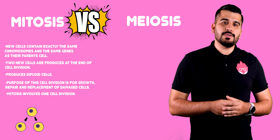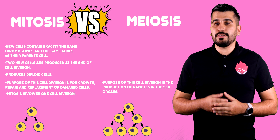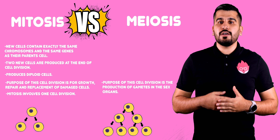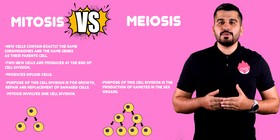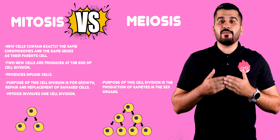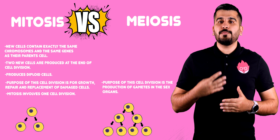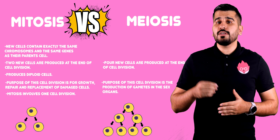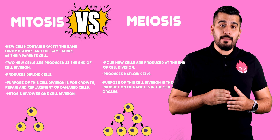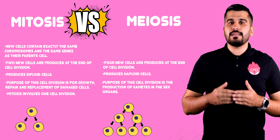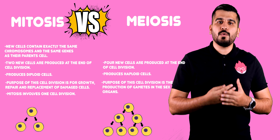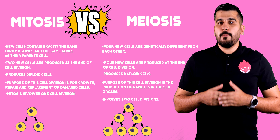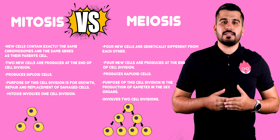In meiosis, the purpose of this cell division is the production of gametes in the sex organs. Gametes are produced not by mitosis, but by meiosis — a reduction cell division. Four new cells are produced at the end of cell division. This type of cell division produces haploid cells. The new cells contain half the set of chromosomes. The four new cells are genetically different from each other, and meiosis involves two cell divisions.